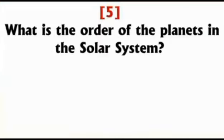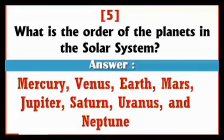Question number 5. What is the order of the planets in the solar system? The correct answer: Mercury, Venus, Earth, Mars, Jupiter, Saturn, Uranus, and Neptune.